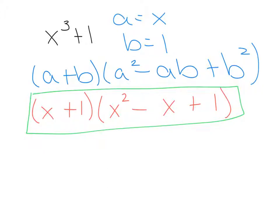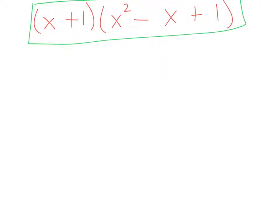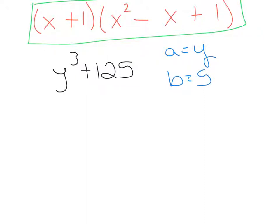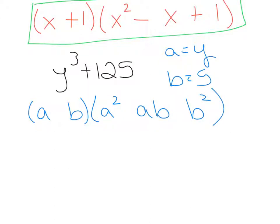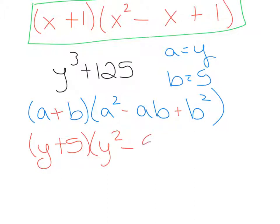Example 5: factor y cubed plus 125. Assign a and b: a is y, and b is 5, since 5 times 5 times 5 is 125. Write the terms: a, b, a squared, ab, b squared. Use SOAP: Same — plus, since we're factoring a sum; Opposite — minus; Always Positive. Fitting a and b in: (y plus 5)(y squared minus 5y plus 25). Those are your factors.